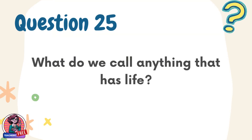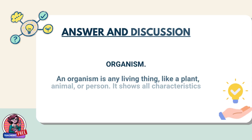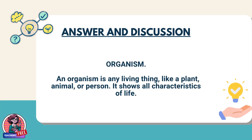Question 25. What do we call anything that has life? Answer: Organism. An organism is any living thing, like a plant, animal, or person. It shows all characteristics of life.